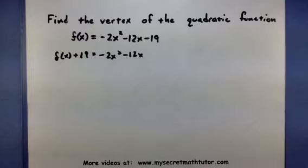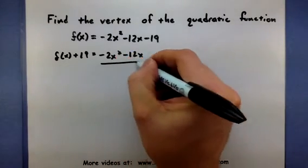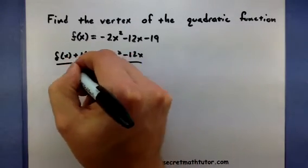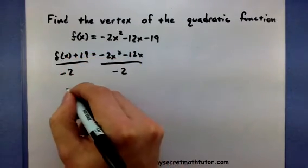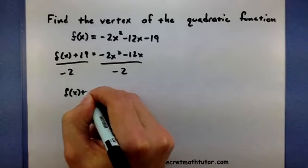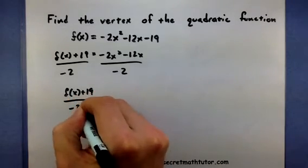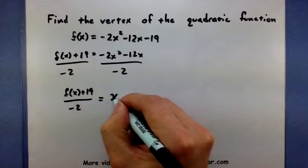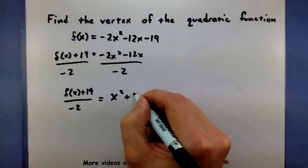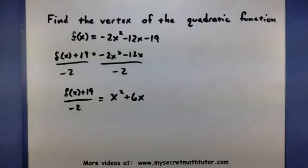Now I want to divide by anything in front of x squared. In this case, that's negative 2. So divide both sides. This will give me x squared plus 6x.